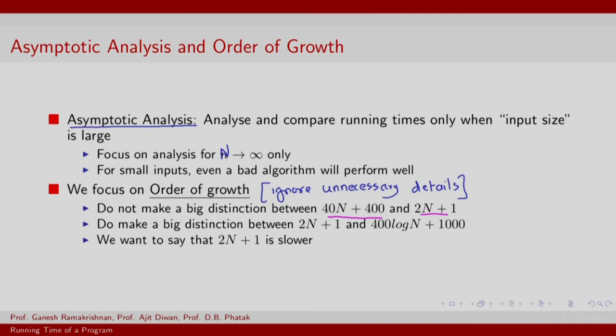Now, this might be surprising for beginners, but the point is for large values of N we have other more serious concerns. The way 40N grows with N is not the way N square grows with N. So N square grows much faster than 40N. So we want to make a big distinction between 2N plus 1 on the one hand and 400 log N plus 1000 on the other hand, or as I pointed out, N square on the other hand.